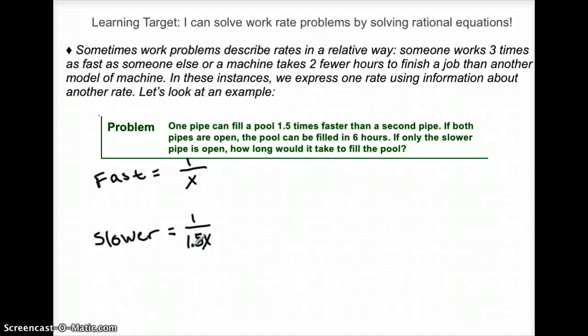Which, like we talked about, makes sense. The slower pipe should have the bigger denominator. So make sure the right one is being multiplied by that factor.